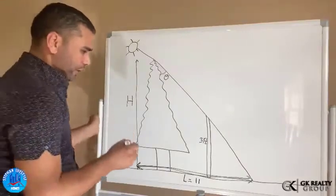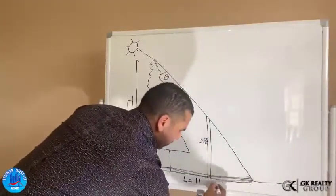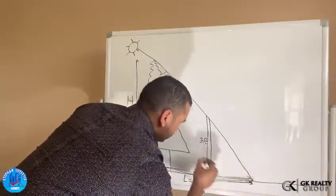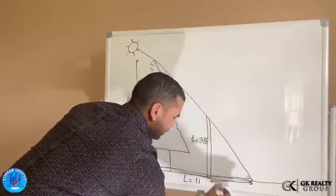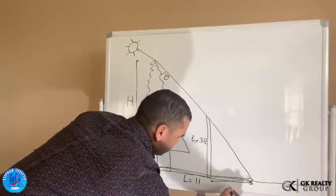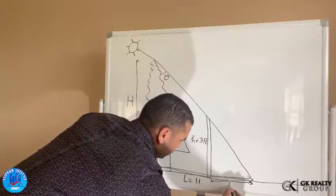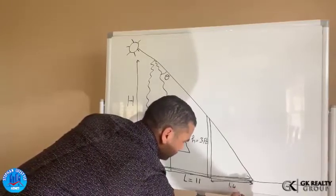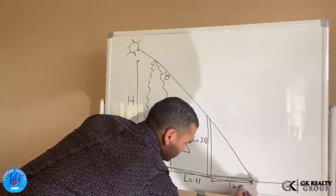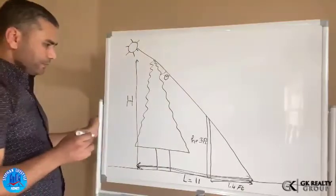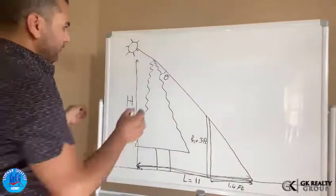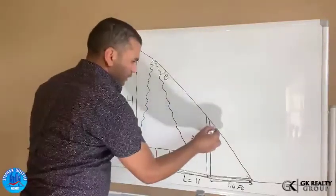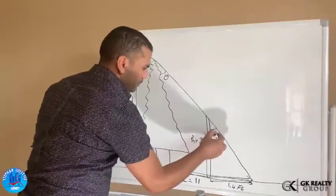So as we measure the shadow of these 3 feet, we call it small l. The length here, and this is small h, is giving us here 1.4 feet, for example. So as we know this angle here is the same. Let's call it theta as well.